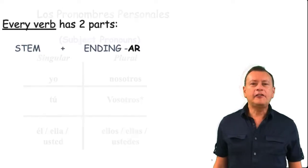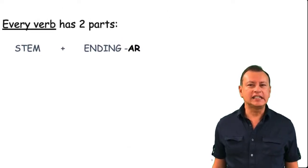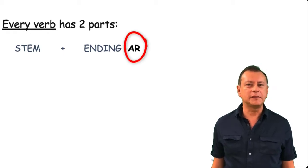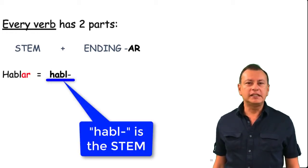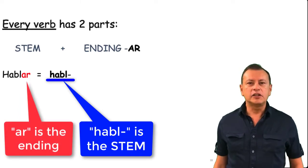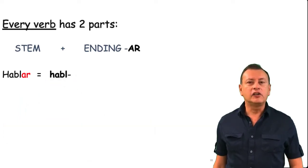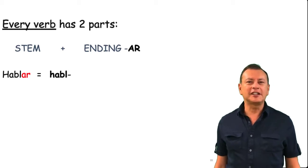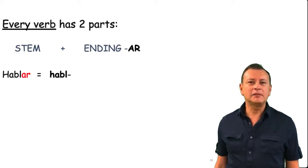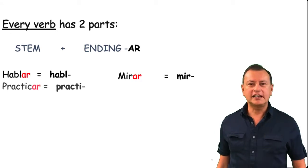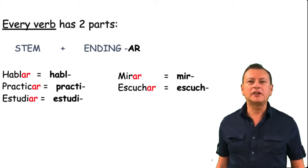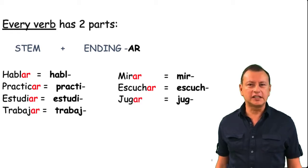Every verb in Spanish has two parts: the stem and the ending. In this case, the ending is AR. For example, hablar — H-A-B-L will be the stem and AR will be the ending. So when you look at a verb in Spanish ending in AR, you are going to consider everything before the AR as the stem. Take a look at more verbs, like mirar — you take off the AR and that will be the stem. Pay close attention to this AR ending because that's the part you are going to remove and substitute with the endings.